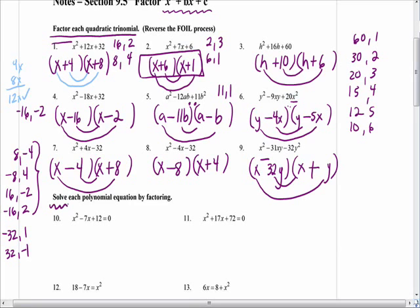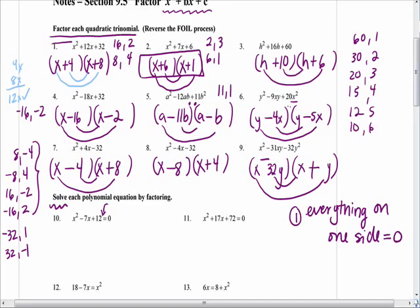Notice the directions change — we have the word solve, we have equal signs, and we have zeros. To solve a trinomial, you have to have everything on one side equal to zero. You must factor. The zero product property says that when things are being multiplied, one of the factors must be zero — it doesn't say anything about addition or subtraction. So let's go ahead and write this trinomial as a product; we're going to un-foil it and keep the equals to zero.